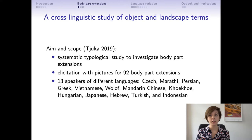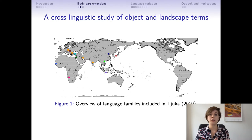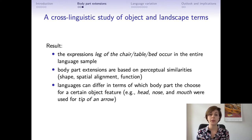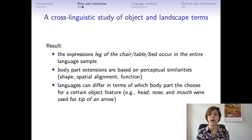I had 13 language speakers participating in my study. They came from different language communities and were all living in Berlin, so it was like an urban fieldwork study. The language families were distributed more or less Eurocentrically, but I did get some languages from Southeast Asia. The results showed that 'leg of the table,' 'leg of the chair,' and 'leg of the bed' occurred throughout the language sample, and those body part extensions are based on perceptual similarities. I investigated three dimensions of similarity: shape, spatial alignment, and function.